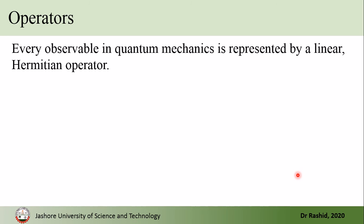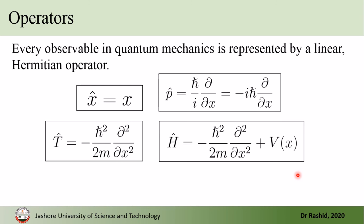In quantum mechanics, to extract information from the wave function, operators are used. These operators correspond to physically observable quantities. Here are some examples: the position operator, the momentum operator, T-hat is the kinetic energy operator, and H-hat is the Hamiltonian operator. The hat notation is used so that they can be distinguished as operators.